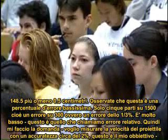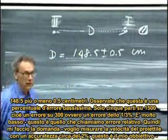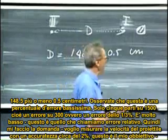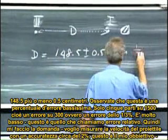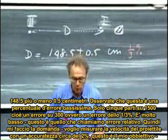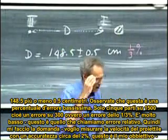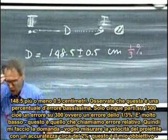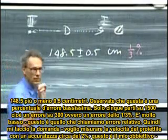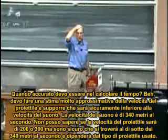I want you to appreciate that this is a very small percentage error. This is only five parts out of 1,500. That is one out of 300, so that is only a one-third percent error. That's very small. That's what we call the relative error. Then I ask myself the question, I want to measure the accuracy of the speed of the bullet to about 2%. That was my goal. How accurate should I do the timing?